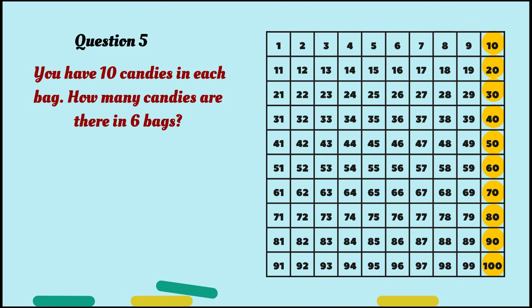Question 5. You have 10 candies in each bag. Got it? How many candies are there in 6 bags? Hmm. So, what this means is there are 6 groups of 10. Because there are 6 bags, and in each bag, there's 10. 6 groups of 10. Can you get the hang of it now? Great!